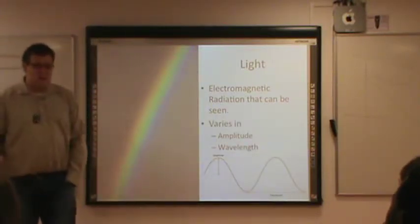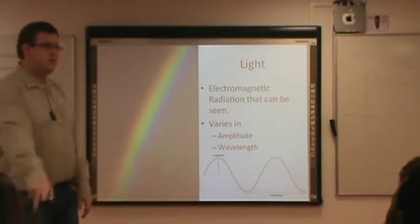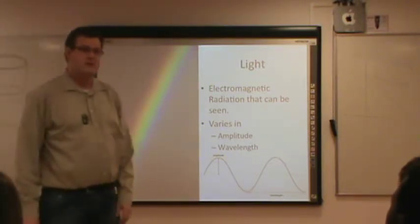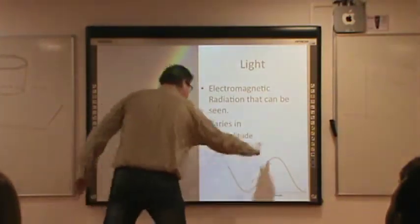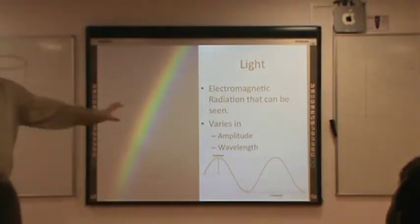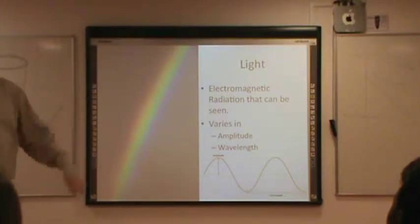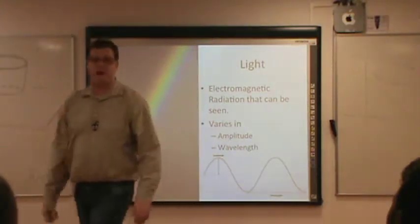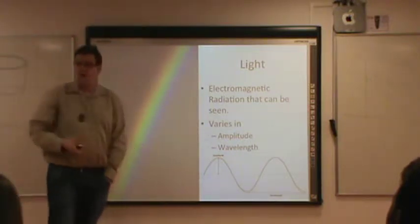Light varies in amplitude and in wavelength. So what's amplitude? It's related to brightness — amplitude is basically the height of the wave.